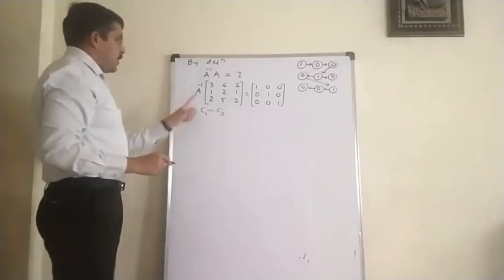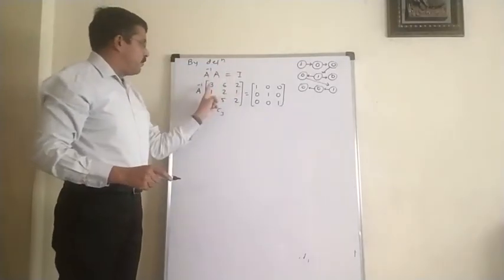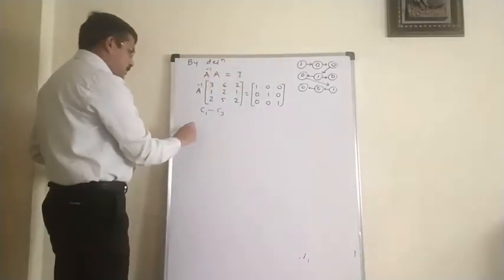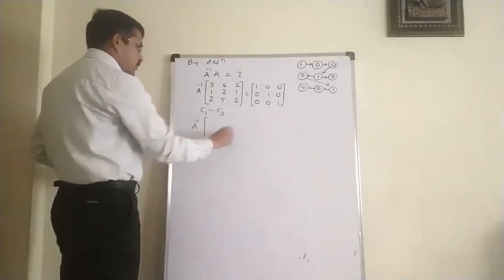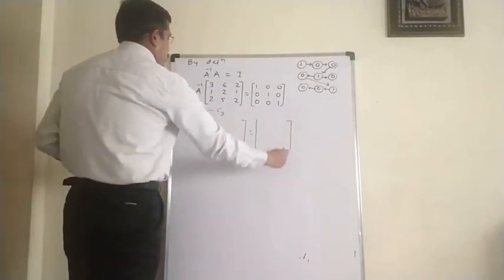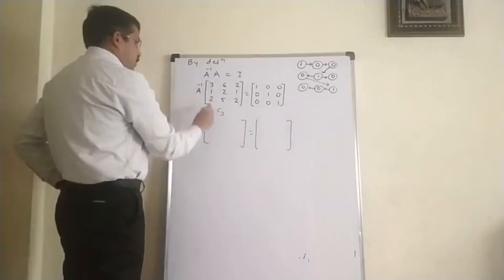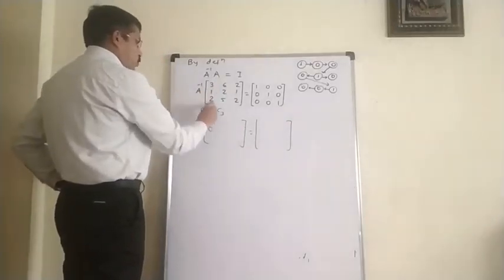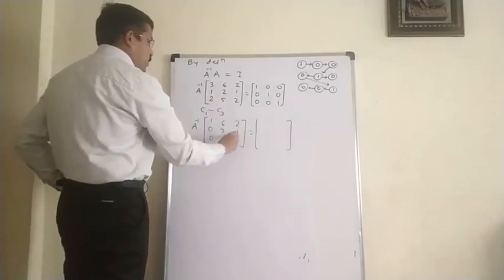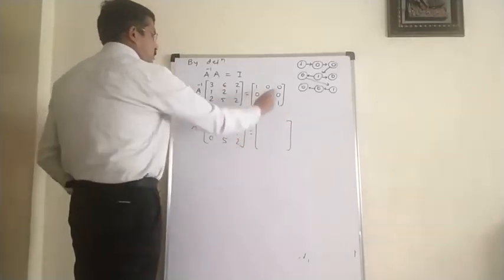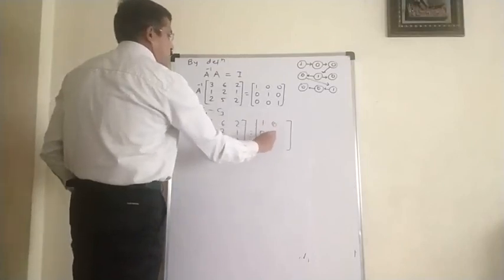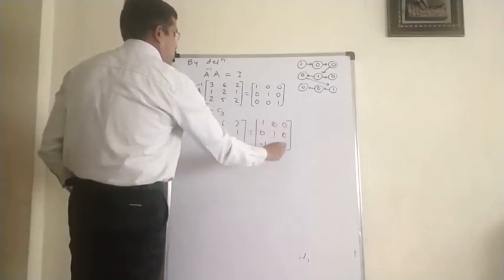Using C1 minus C3: 3 minus 2 gives 1, 1 minus 1 becomes 0, 2 minus 2 becomes 0. Columns 2 and 3 remain as 6, 2, 5 and 2, 1, 2. On the right side, 1 minus 0 is 1, 0 minus 0 is 0, 0 minus 1 gives minus 1, then 0, 1, 0 and 0, 0, 1.